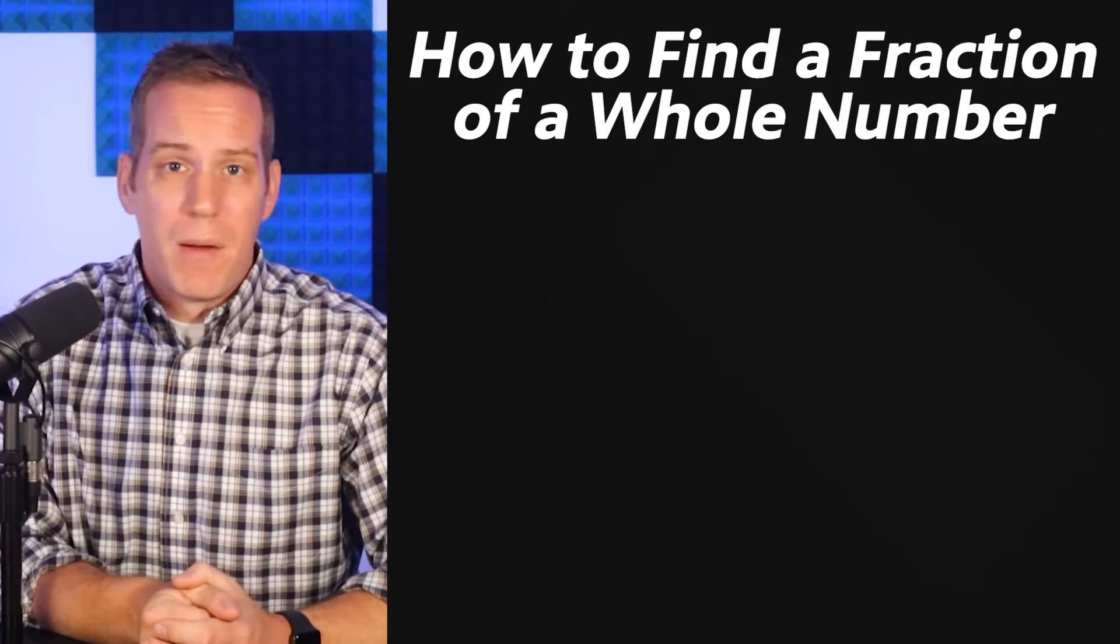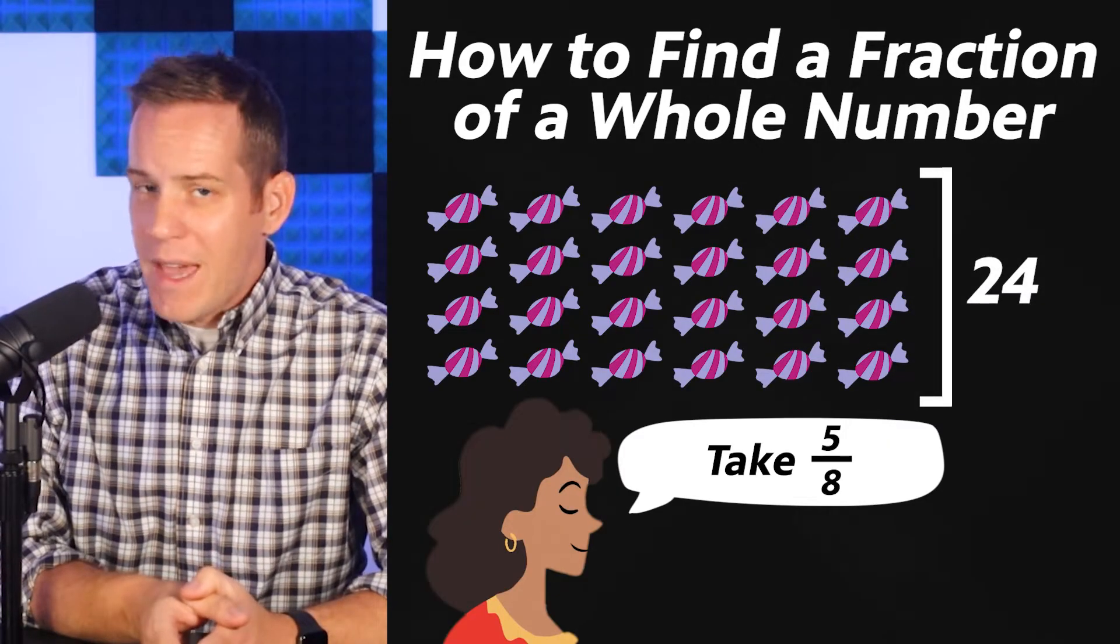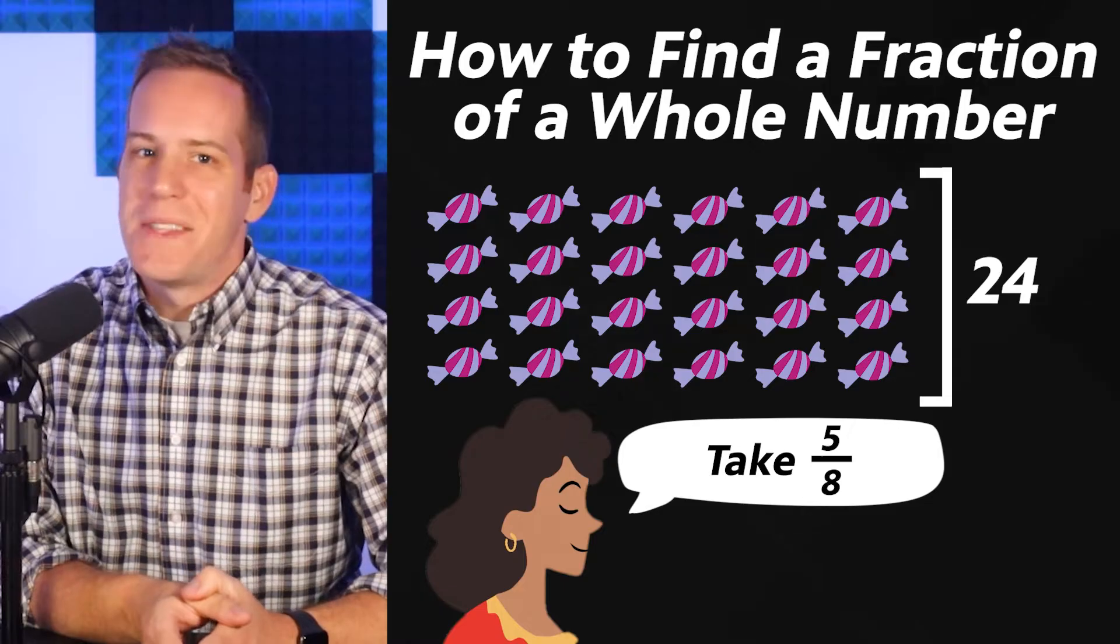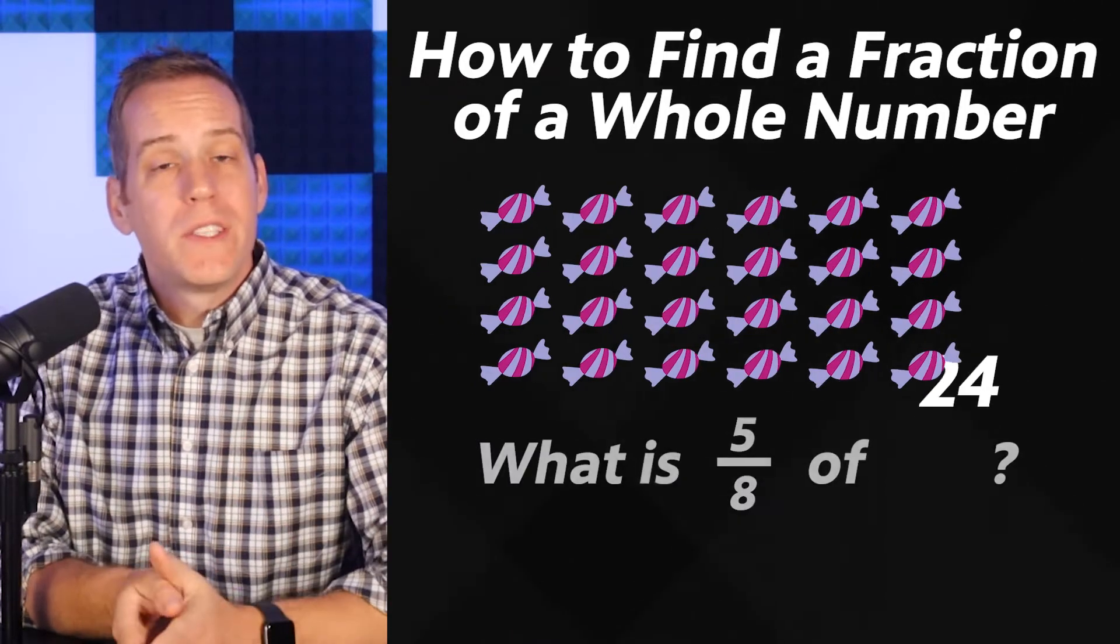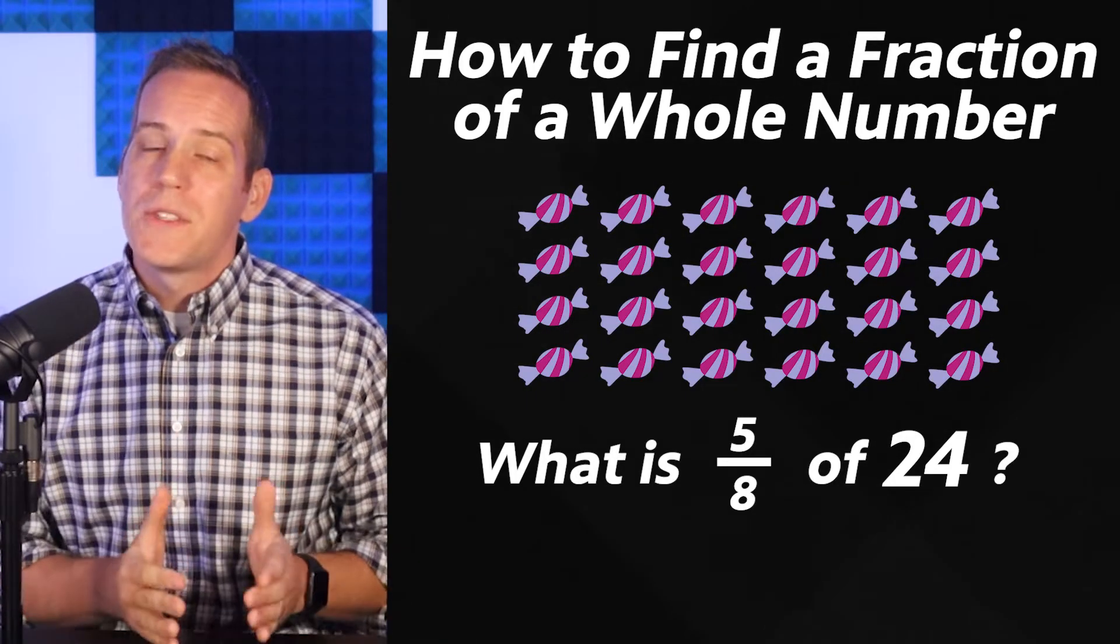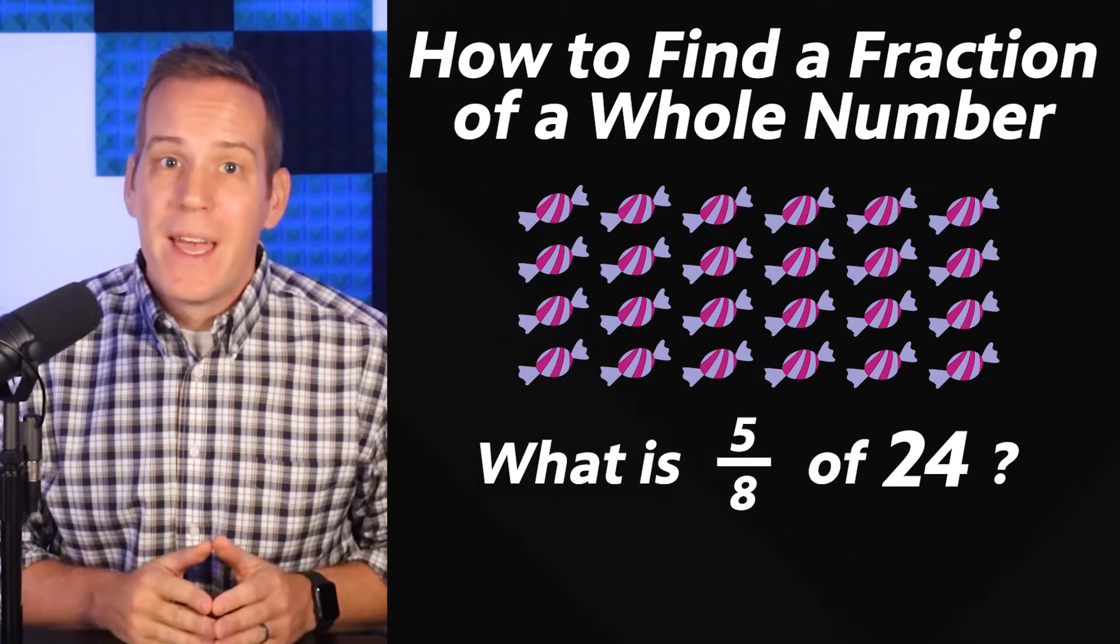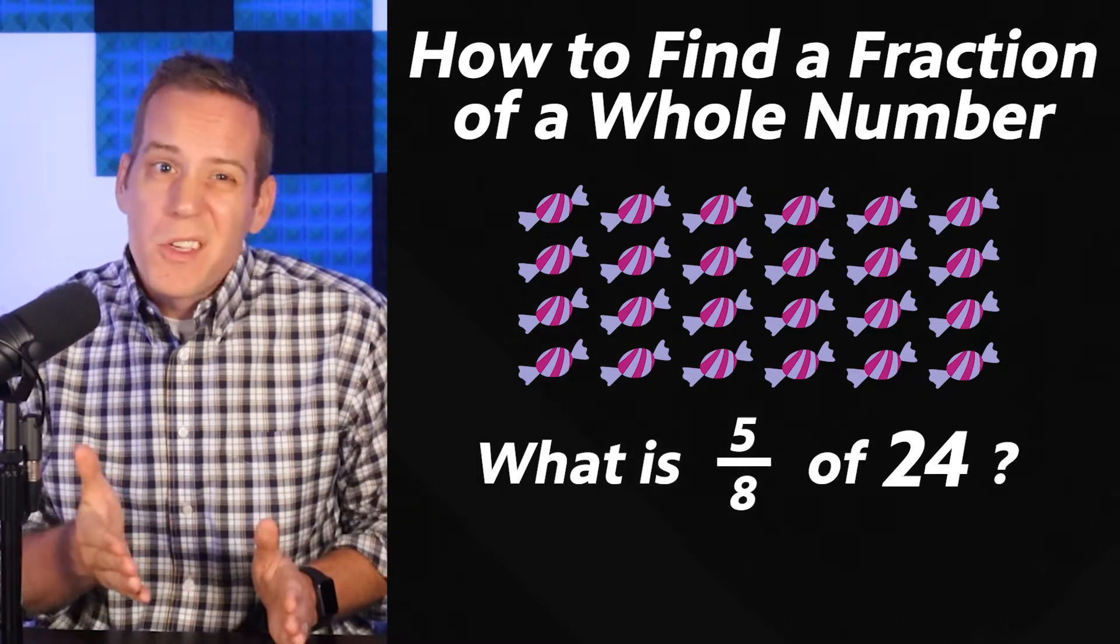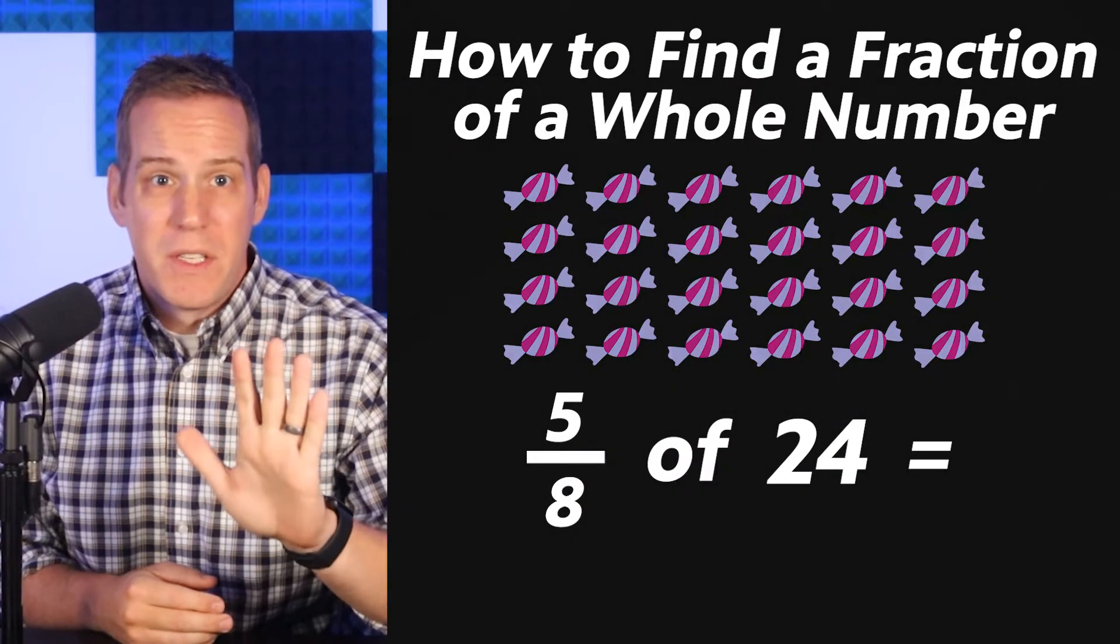Let's go back to our original candy problem. We have 24 candies but we can only take 5 eighths of them. So how many is that? What's being asked here is this: What is 5 eighths of 24? Now there are two ways to solve problems like these. I'm gonna start by showing you the easiest way and then I'll also explain why you'll also need to learn it the other way. So let's solve this problem. Watch how simple this is.